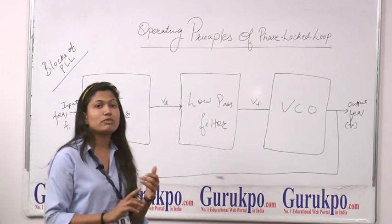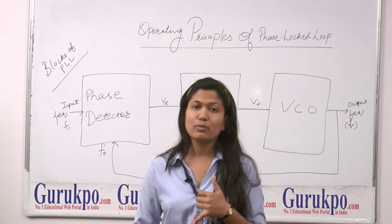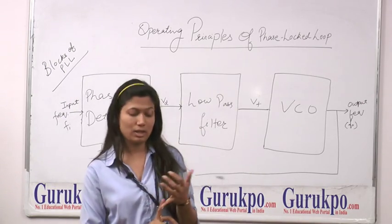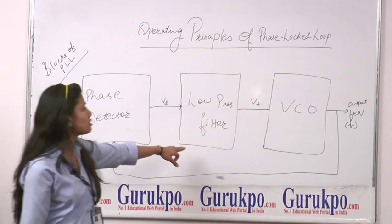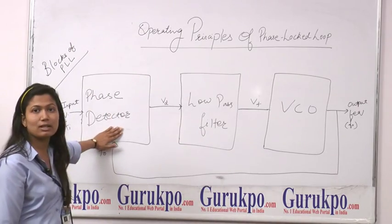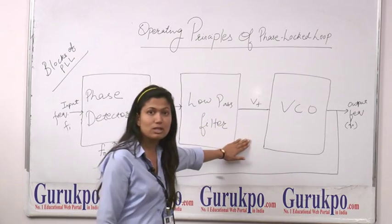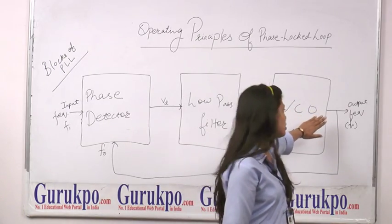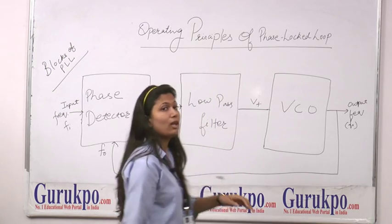Now let us talk about the block diagram of a Phase Locked Loop. There are three blocks in a Phase Locked Loop: the first one is the Phase Detector, the second one is the Low Pass Filter, and the third one is the VCO, which means Voltage Controlled Oscillator.